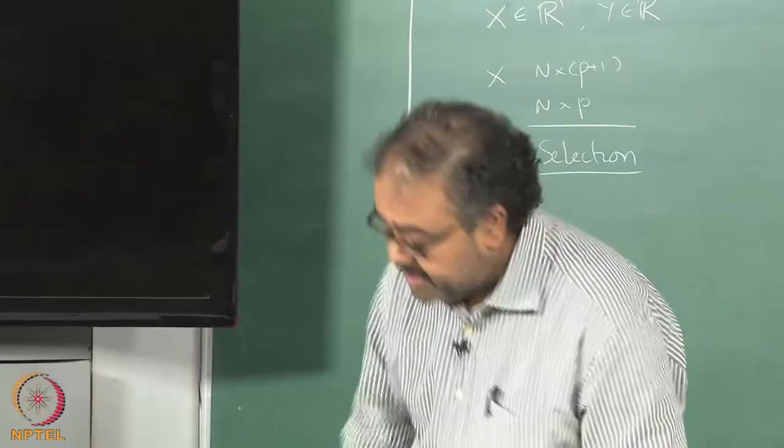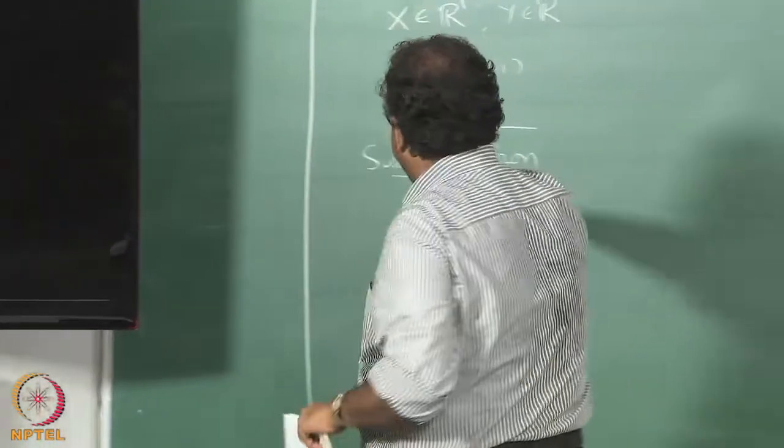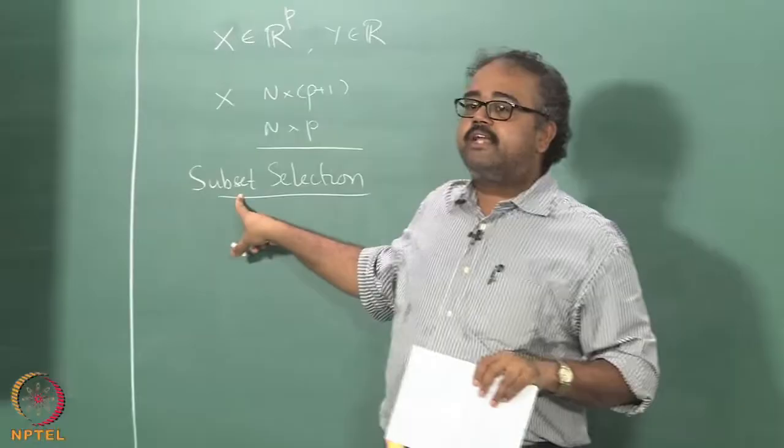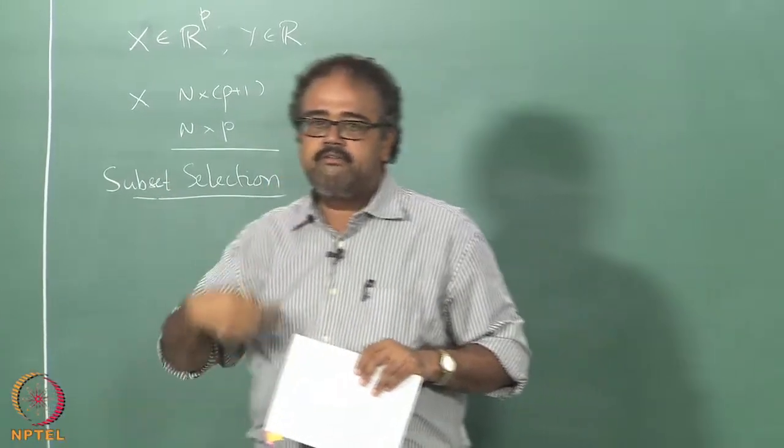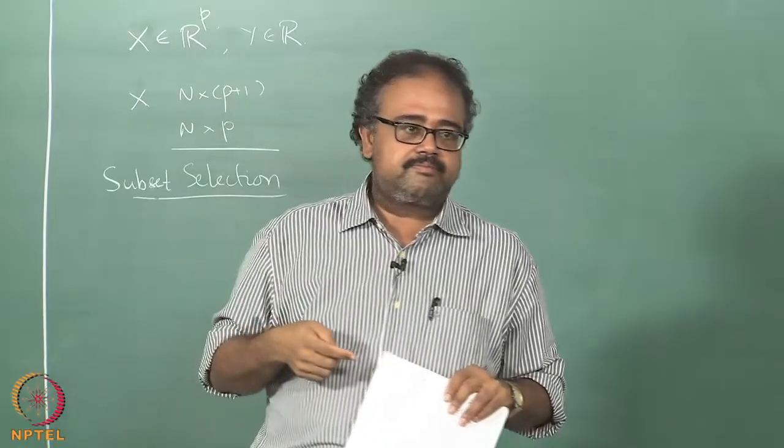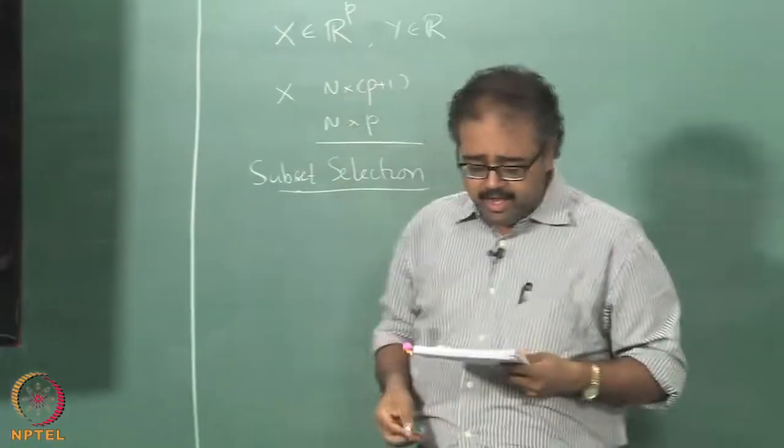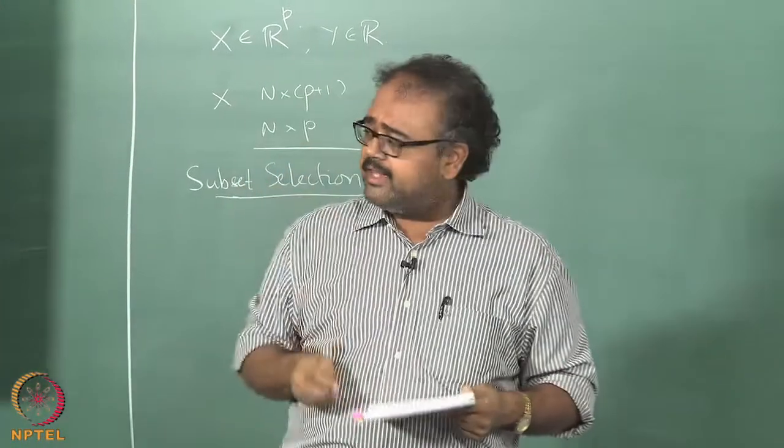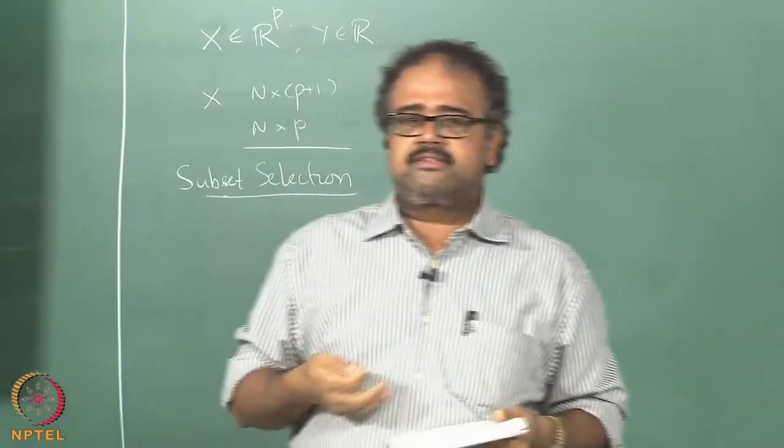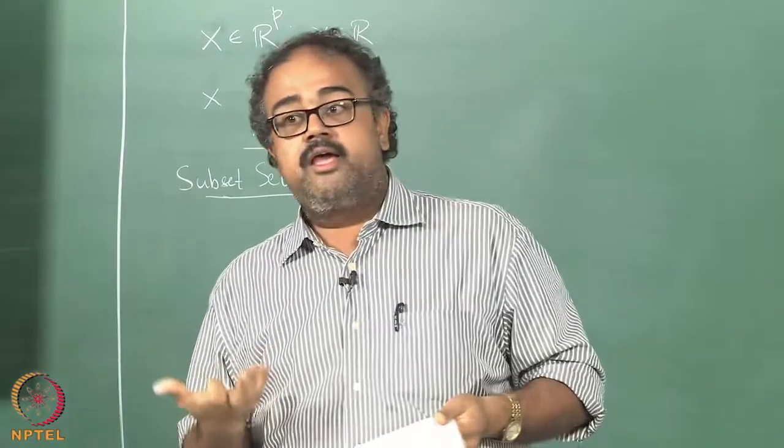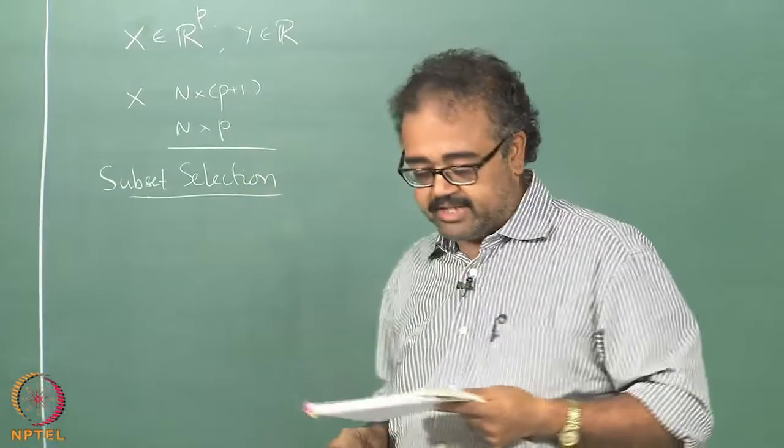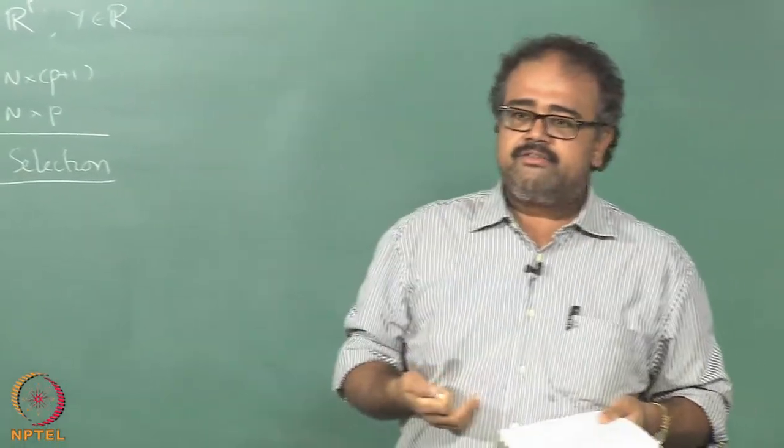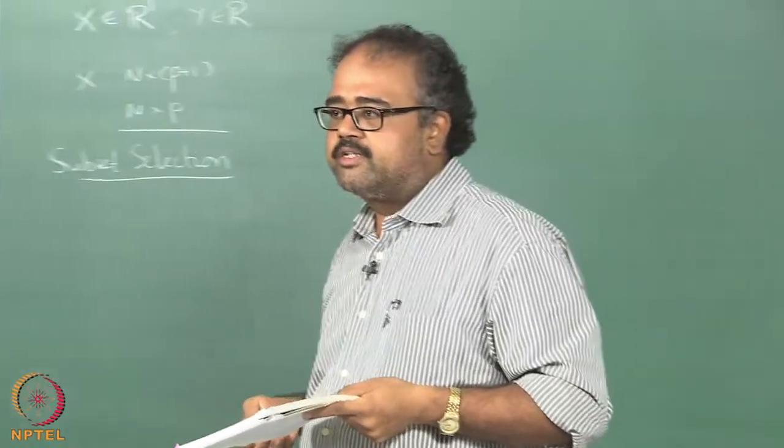That is essentially what we are going to look at. What I mean by subset selection here is that I am going to select a subset of the input variables to use for fitting the line. One thing is we can reduce the variance significantly and therefore we can improve the prediction accuracy of the model. That is one of the reasons we would like to do subset selection. Is there any other reason you can think of for wanting to work with a smaller subset?